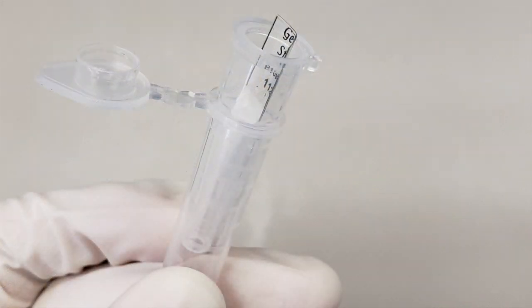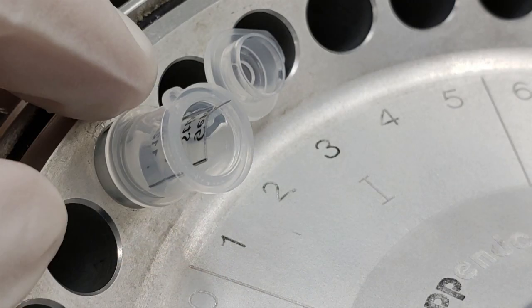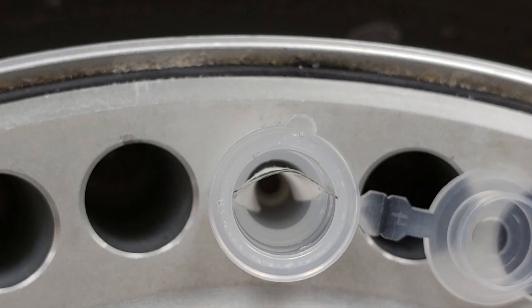Place the GeneStix with the Spin Funnel into a collection tube. Orient the tube as shown here with the notch pointing up, and the GeneStix curving against the notch.